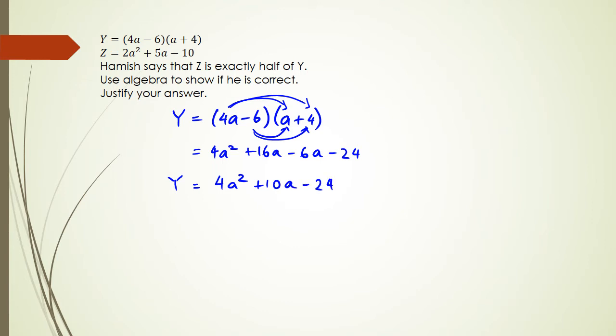Now the second part, it actually says that Hamish says that z is exactly half of y. So we got to figure out what half of y is. Okay, so if we want to do half of y, what we're doing is half multiplied by 4a squared plus 10a minus 24.